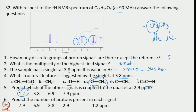Next, predict the number of protons present in each signal. Signals at 7.92 ppm: 1 proton each. The signal at 6.9 ppm, the one at 3.83 ppm — by integration we should be able to determine 3 protons, then 2.92 ppm and 1.23 ppm.